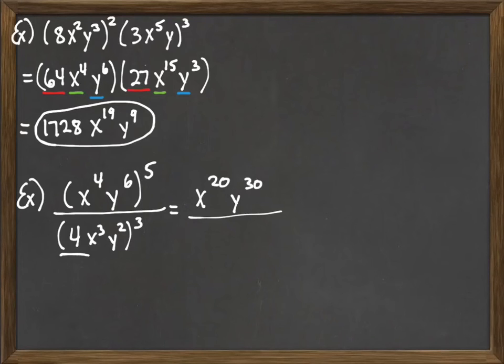So we would begin 4 to the third. That's a number, so we just do the exponent. 4 times 4, 3 times, we'd make that 64. And then we go x cubed to the third. Remember, we drop down to multiplication. 3 times 3 would give us x to the ninth. And then y squared to the third, 2 times 3, would make that y to the sixth.